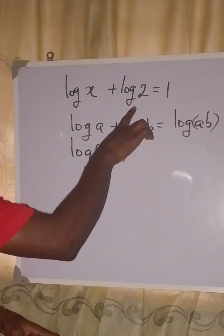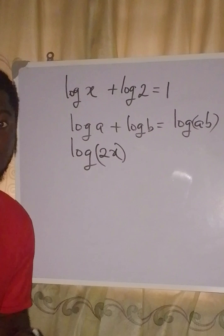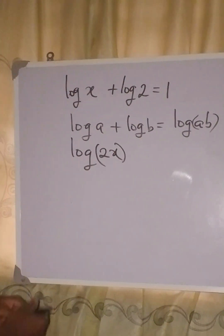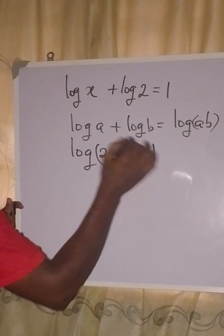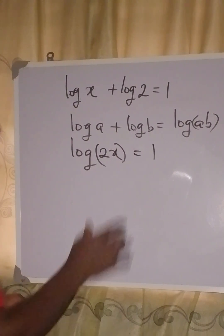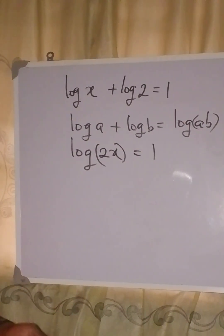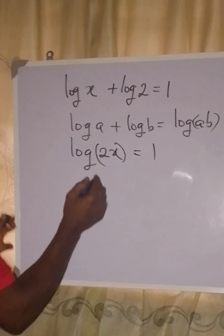This does not have any base, that means that it is in base 10. This right here is also in base 10, natural logarithm. This is equal to 1, and the next thing you do is to relate this to indices.